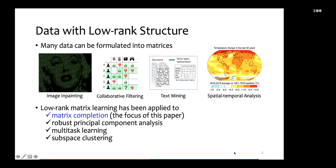A popularly used and important structure is low rank structure. Actually, many data can be formulated into matrices, such as images, texts, rating matrices, and spatial temporal data. Low rank matrix learning has been applied to a broad type of applications and problems, such as matrix completion, robust PCA, multi-task learning, and subspace clustering.